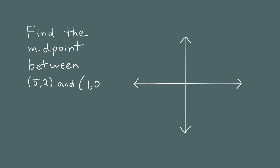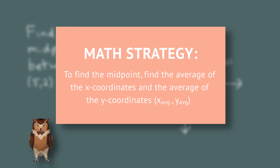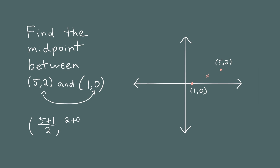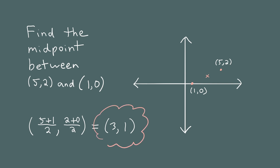Let's find the midpoint between (5, 2) and (1, 0). The point (5, 2) is around there, and the point (1, 0) is around here, so the midpoint should be somewhere around here. To find the midpoint, you take the average of the x-coordinates and the average of the y-coordinates. We find the average of 5 and 1: that's 5 plus 1 over 2, which is 3. Then the average of the y-coordinates 2 and 0: that's 2 plus 0 divided by 2, which is 1. So the midpoint of these two points is (3, 1).